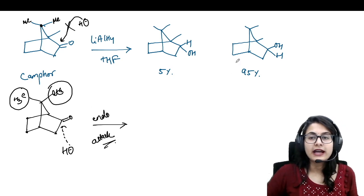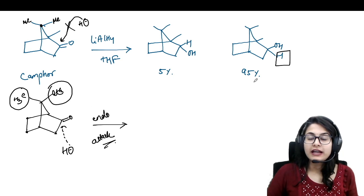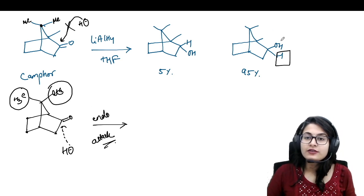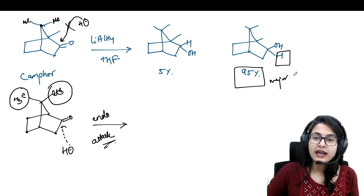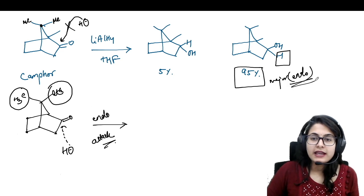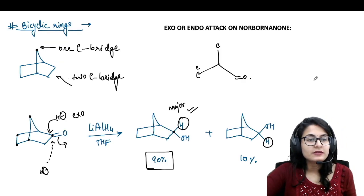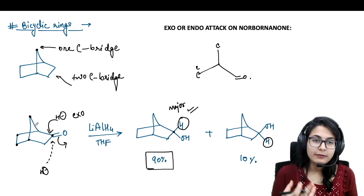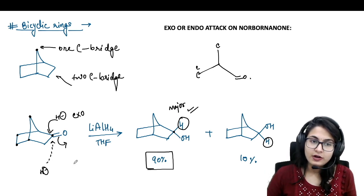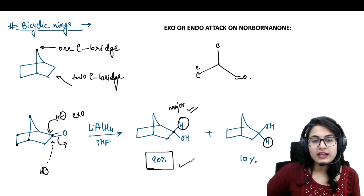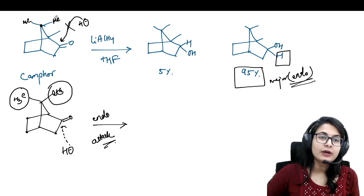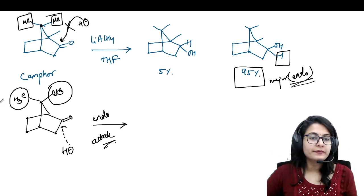Here the endo attack is favored. The hydride transfers from below and OH goes on top — 95% major product. Just by changing the number of groups you change the major and minor product. With only one carbon bridge you had the major exo product; in camphor with two bulky methyl groups on the one-carbon bridge, it becomes even more bulky and hence the endo attack gives you the major product.